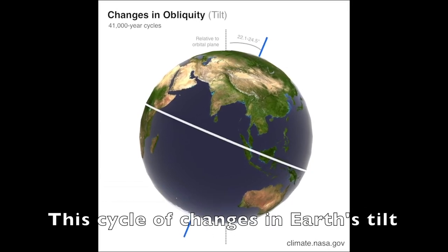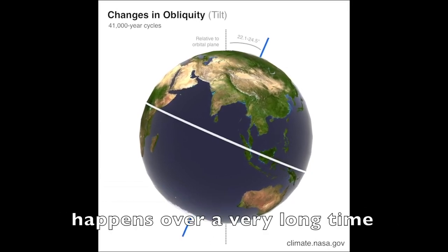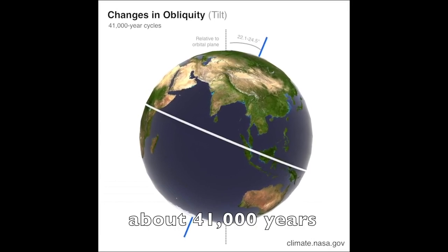This cycle of changes in Earth's tilt happens over a very long time, about 41,000 years. So it cannot be responsible for the rapid rise in global temperature that we see today.